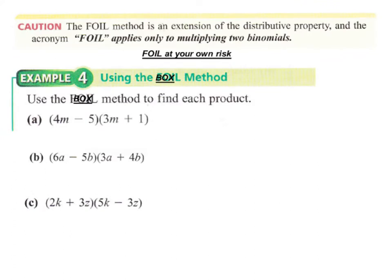Most textbooks will mention the FOIL method — first, outside, inside, last — which reminds you to find all four products when multiplying a binomial times a binomial. The problem with FOIL is that it only applies to multiplying two binomials. With the box method, you can just change the dimensions to handle a trinomial times a binomial, or whatever is needed.